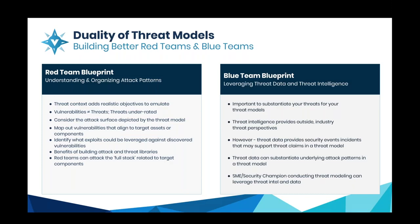But what we want to do here is begin with a threat model. When you're attacking an organization as a white hat, you want to really emulate true adversaries. Sometimes that's not done well when the target asset is simply dictating what you do next — for example, finding an Apache web server and just trying Apache exploits. The whole exercise becomes focused around the types of components you have in scope.